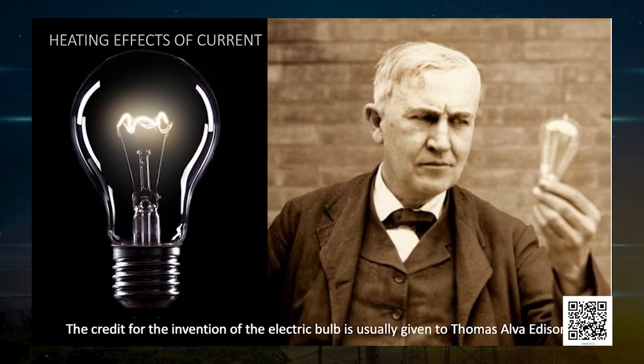However, the heating effect of electric current has many useful applications. The electric laundry iron, electric toaster, electric oven, electric kettle, and electric heater are some familiar devices based on Joule's heating effect. Electric heating is also used to produce light as in an electric bulb, where the filament must retain as much of the heat generated as possible so that it gets very hot and emits light. It must not melt at such high temperatures.